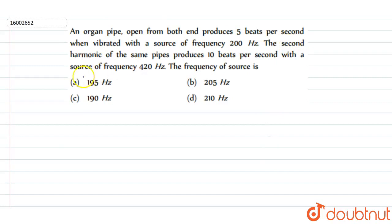The second harmonic of the same pipe will produce 10 beats per second with a source of frequency 420 Hz.